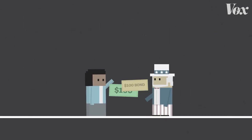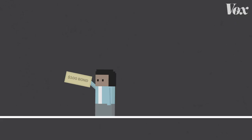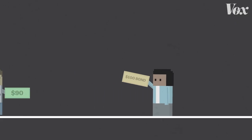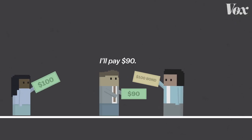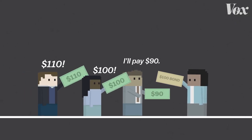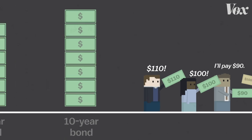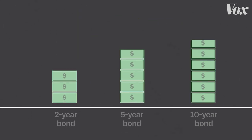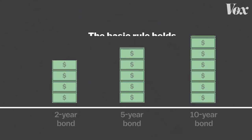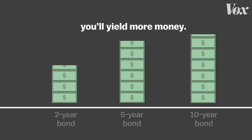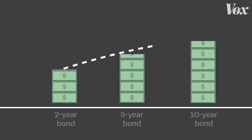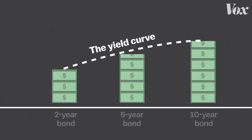Most people don't buy bonds from the government — they buy and sell them from each other in the secondary market. And the prices change based on how much demand there is for a bond, which means the amount of profit you can make on each bond changes every day. Still, the basic rule holds: if you let the government keep your money for longer, you'll yield more money. Trace these bars on any given day, and you get a curved line showing the yields of different bonds — what people call the yield curve. And normally, it points upward.